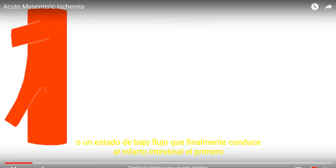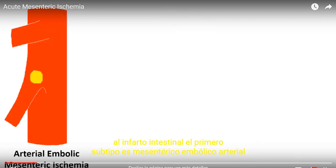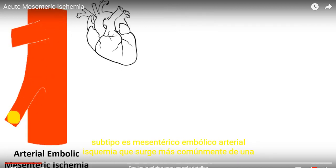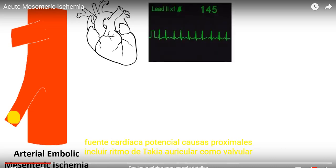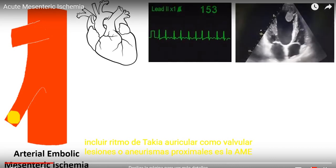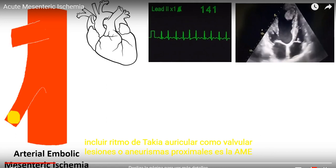The first subtype is arterioembolic mesenteric ischemia, most commonly arising from a cardiac source. Potential proximal causes include atrial tachyarrhythmias, valvular lesions, or proximal aneurysms.